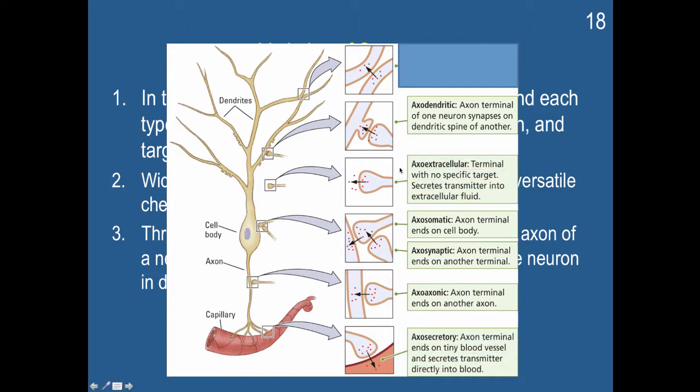And then you have this axoextracellular. The terminal has no specific target. It secretes the neurotransmitter into extracellular fluid. So neurotransmitters secreted this way would just hope to be received by relatively nearby receptors to result in some graded potentials.